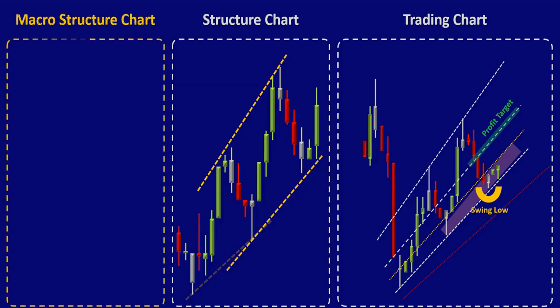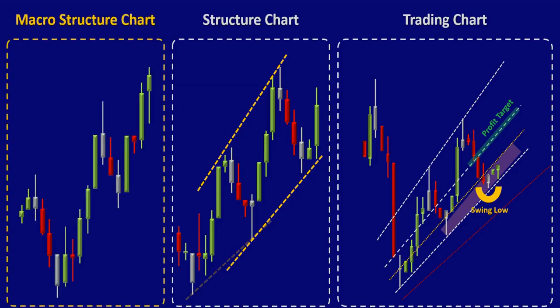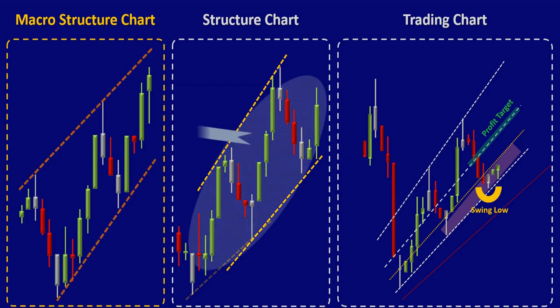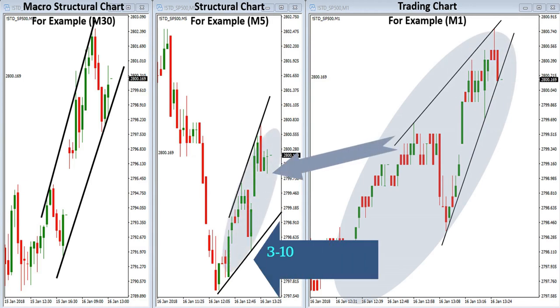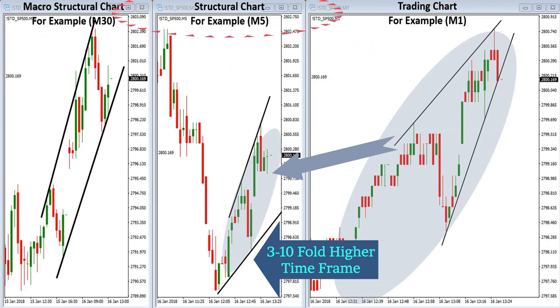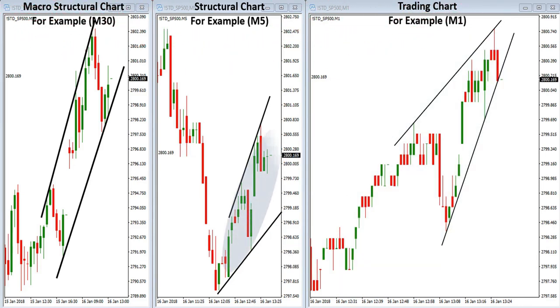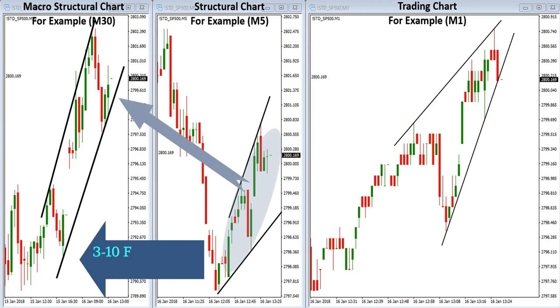Due to the fractal nature of the price, there are always market players with larger positions and profit expectations in the macro structural higher time frames than your current structural chart. To see the market macro structure, you could use the same rule of 3 to 10-fold higher time frames of the trading chart to look at the structural chart — and again, use a time frame 3 to 10-fold higher than the structural chart to have a glimpse of the macro structural market players.